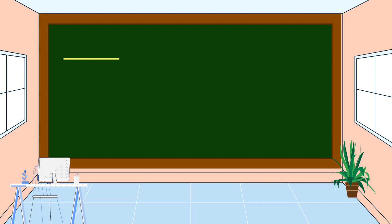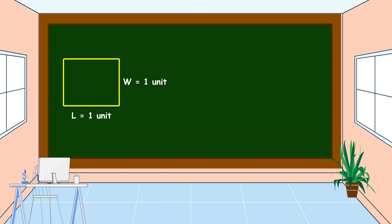If we add another dimension, it looks like this. This is a square — it consists of two dimensions: the length and the width. For example, the length is one unit and the width is also one unit, because this is a square. As we know, a square is a special kind of rectangle which has four equal sides. What do we call the number of square units in a region? Yes, we call it area.